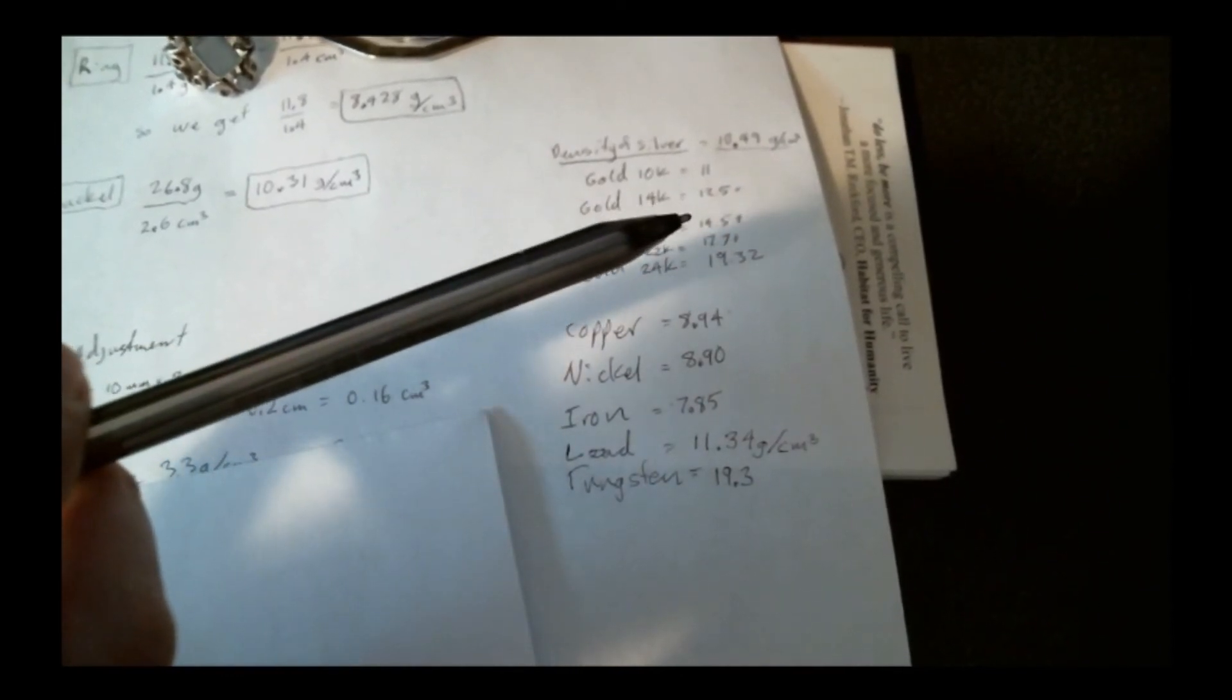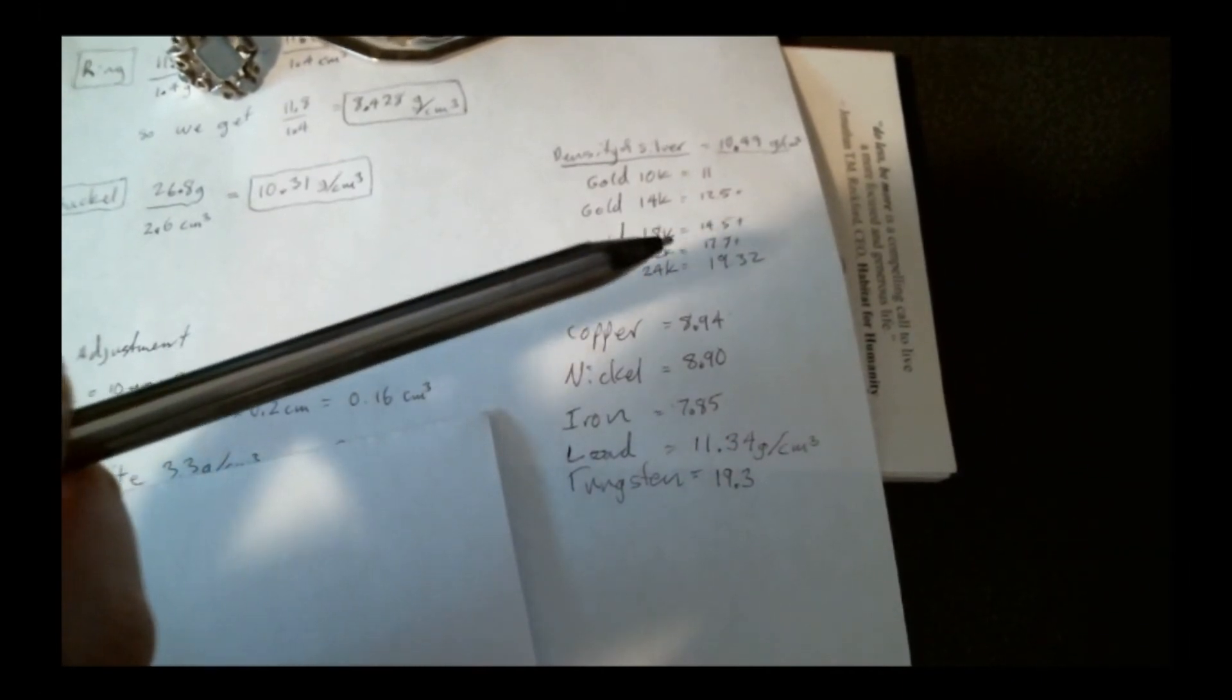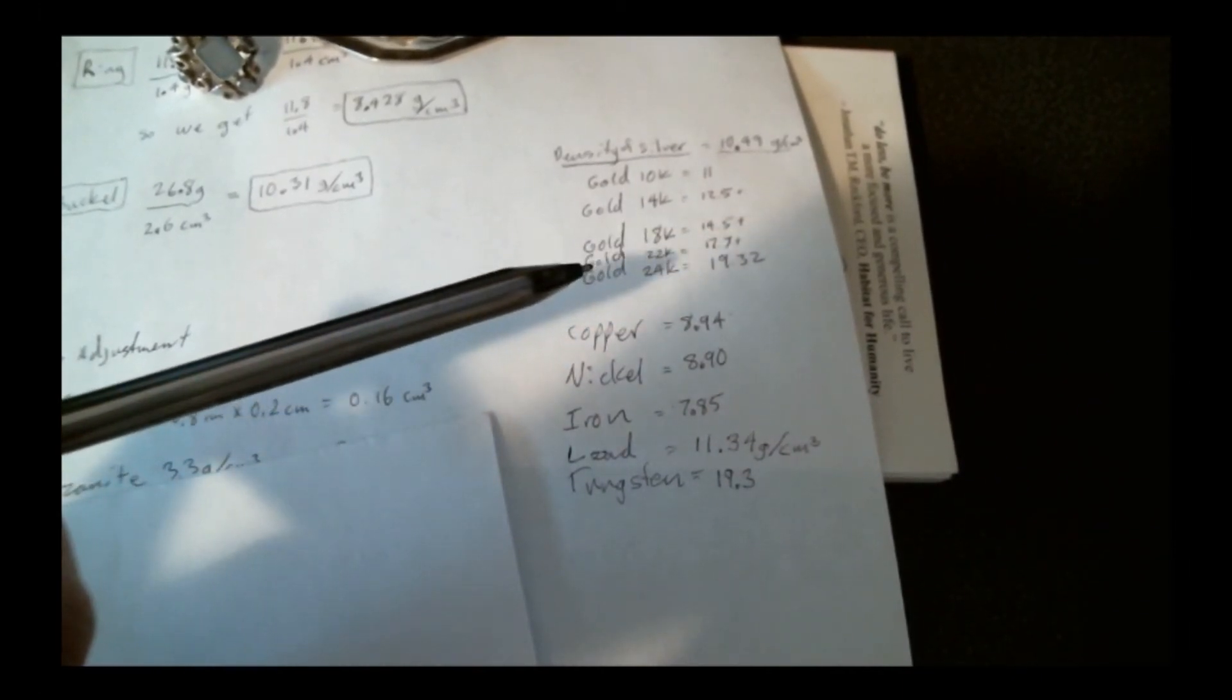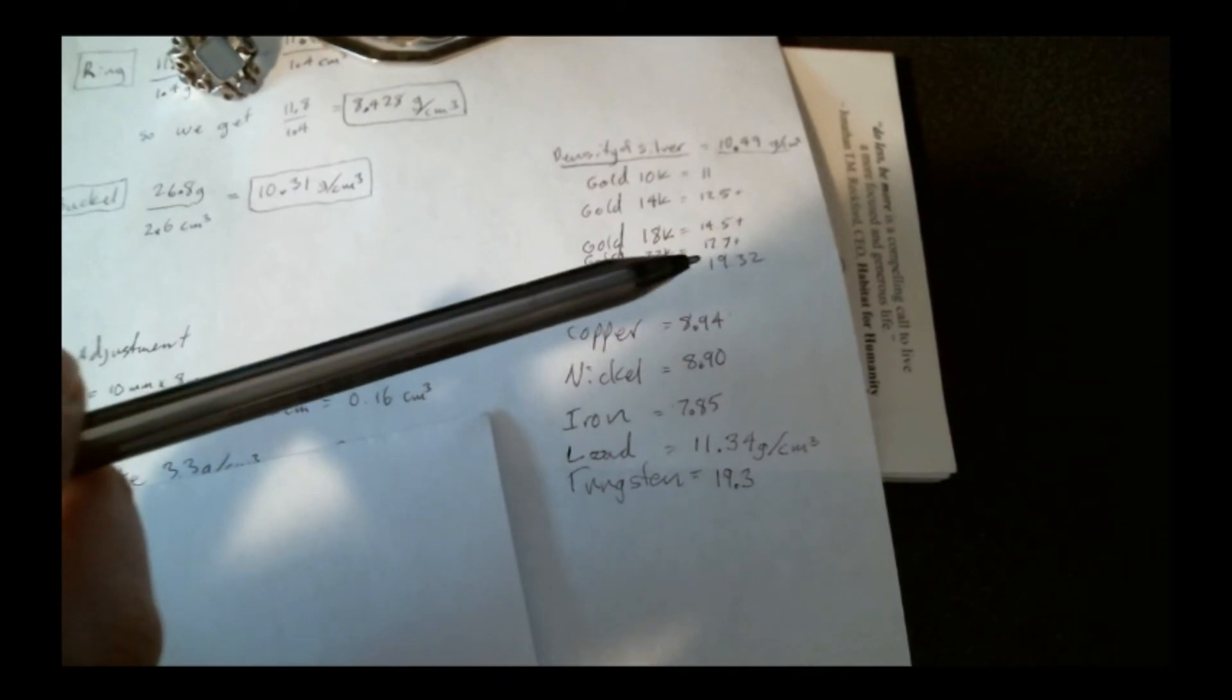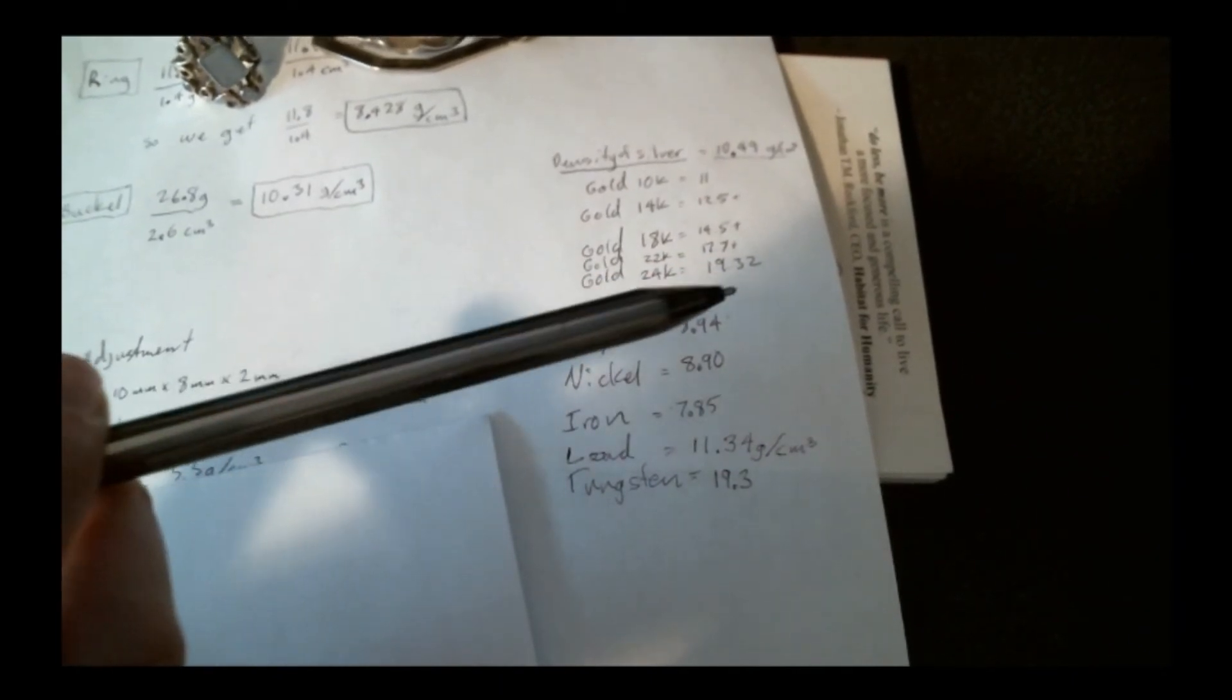14, 12.5. 18, 14.5. 22, 17.7, and pure gold is a 19.32.